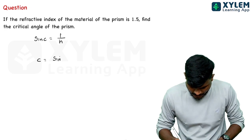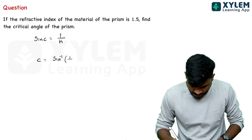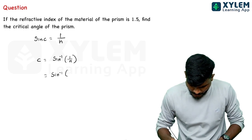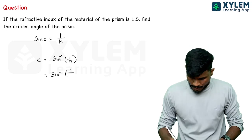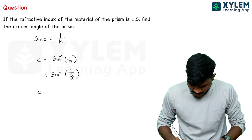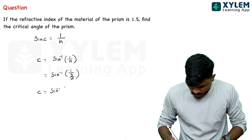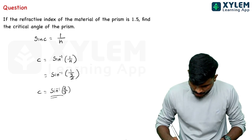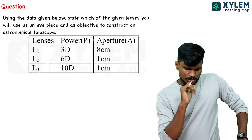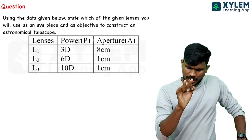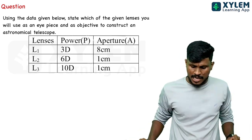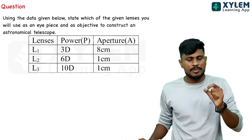Now, sine inverse of 1.5 is equal to 3 by 2. So c equals sine inverse of 2 by 3, which gives the critical angle.